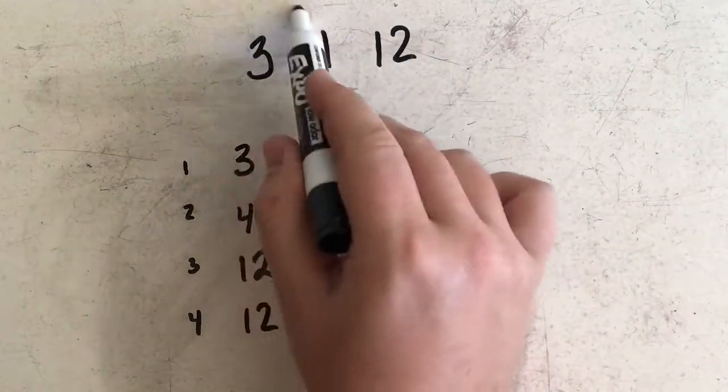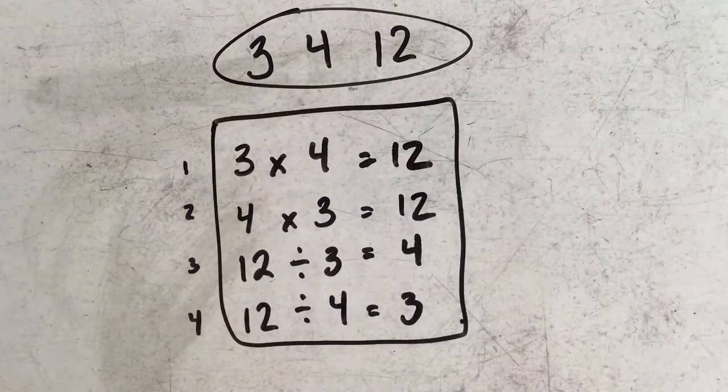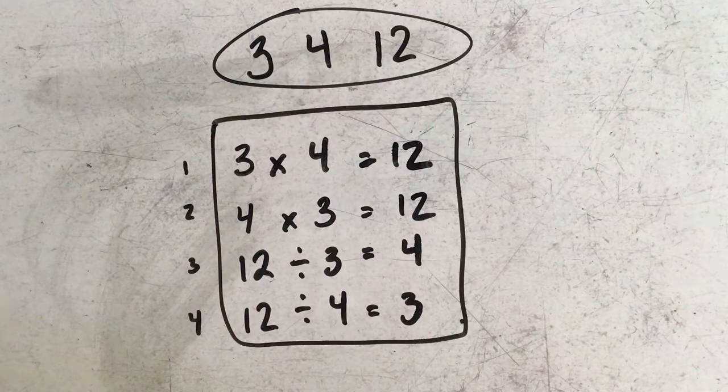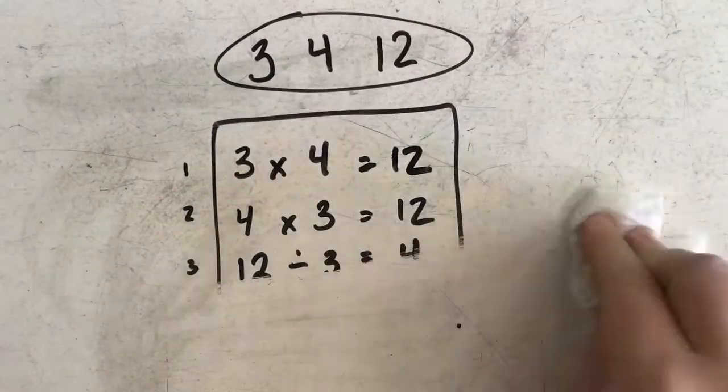So what I did with these three numbers up at the top is I just created a fact family of information with those three numbers using the connection that they all share in multiplication and division. Take a look at another example.